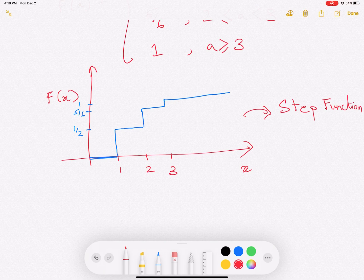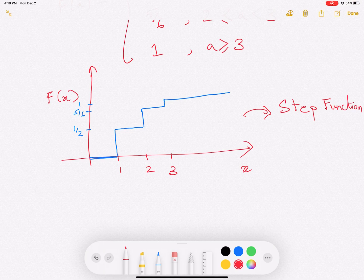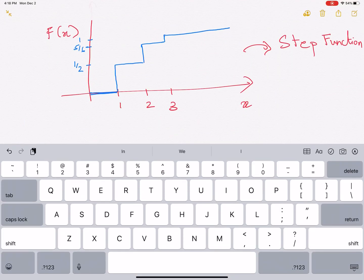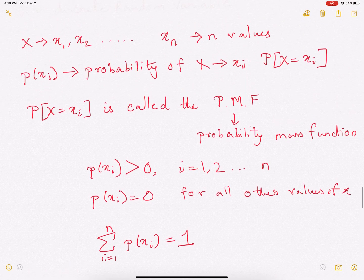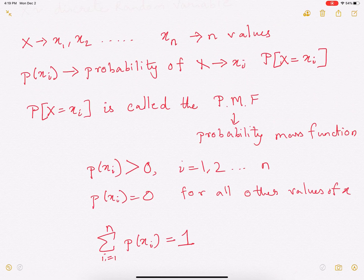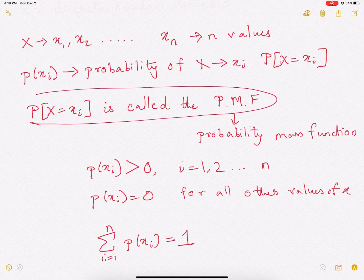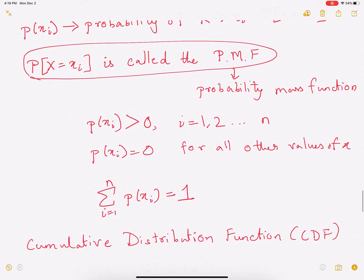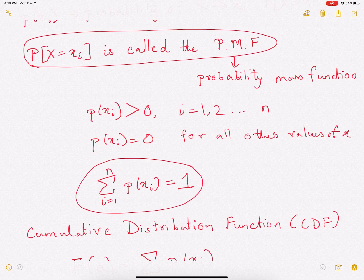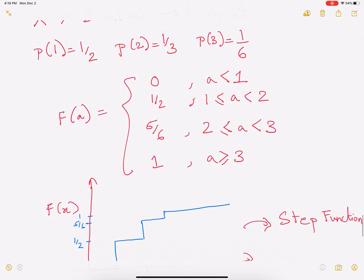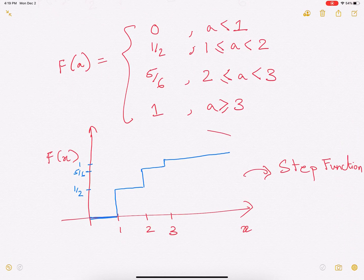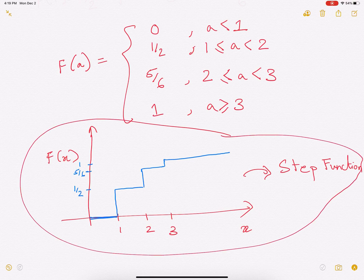So what did we study in this video? We studied what is a discrete random variable. Studied what is a discrete random variable. That's what we studied here. Then we studied what is a PMF. And studied that the probability should add up to 1. Then we looked at CDF. And what we understood by this simple example is that a CDF is a step function.